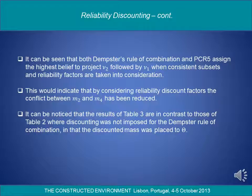It can be seen that both Dempster's rule of combination and PCR5 results are shown in Table 3. The result in Table 3 assigns the highest belief to project New 2, followed by New 1, when consistent subsets and reliability factors are taken into consideration. This would indicate that by considering reliability discount factors, the conflict between M2 and M4 has been reduced. It can be noticed that the results of Table 3 are in contrast to those of Table 2, where discounting was not imposed for the Dempster rule of combination in that the discounted mass was placed to θ.